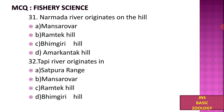Next, the Narmada river originates on which hill? A) Manasarovar, B) Ram Tech, C) Brahmagiri, D) Amarkantak Hill. The Narmada river originates on the Amarkantak Hill.